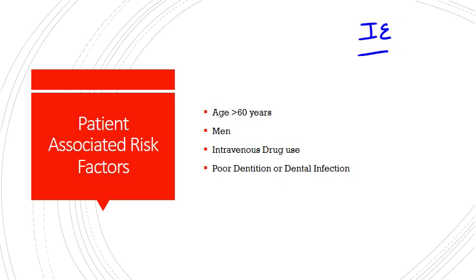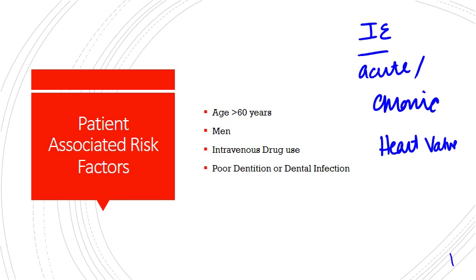Bacterial endocarditis, or IE, is basically either an acute or a chronic disease process that results from bacterial invasion of a focal area of endothelium of a heart valve leaflet or cardiac chamber. So it can be the valve — patients with damaged heart valves are at higher risk — but it can also be the cardiac chamber. It's not limited to the valve portion of the heart; it's basically any time you're having inflammation within your heart.